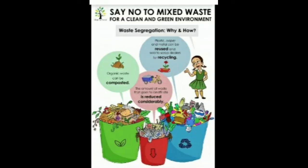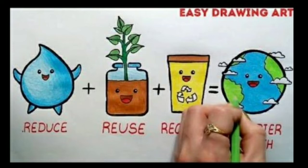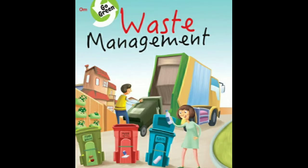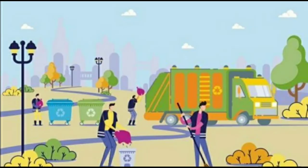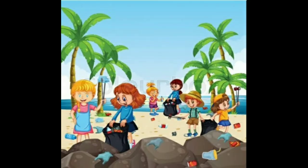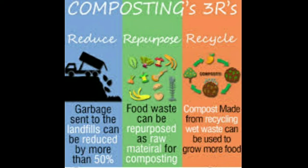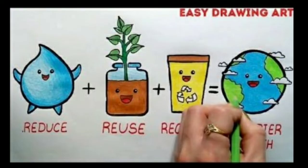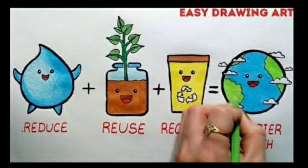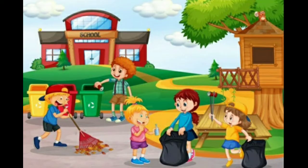Now, the three R's of waste management. These three efforts are emphasized for waste management: source reduction, reuse and recycle. Source reduction refers to many changes in the design, manufacture, purchase or use of materials or products — including packaging — to reduce the amount or toxicity before they become municipal solid waste.